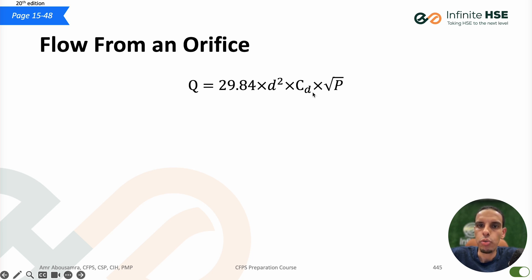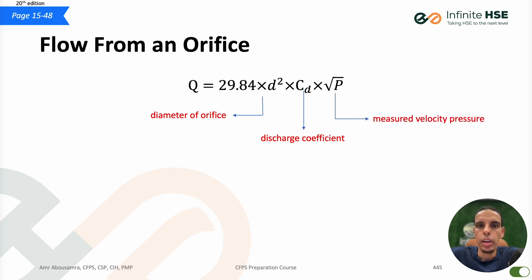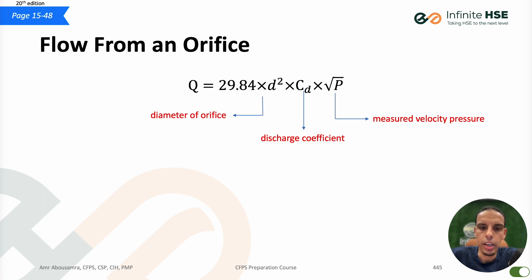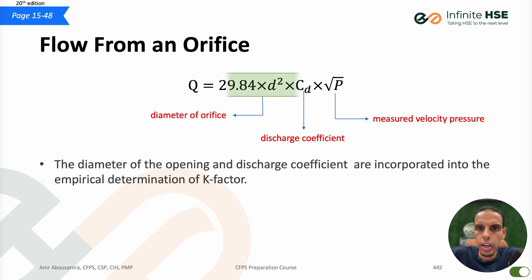As discussed, the equation is Q = 29.84 × d² × cd × √P, where d is the diameter of the orifice and cd is the discharge coefficient, and P is the velocity pressure. Looking at this equation, three components are identical — constant — for each sprinkler or orifice: 29.84 is constant, the diameter is constant for a given orifice, and the discharge coefficient is constant because the material is the same. If we aggregate all three constants together, we get one constant — the k-factor.